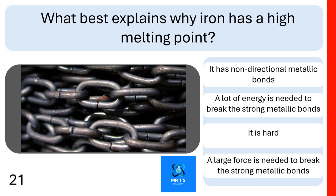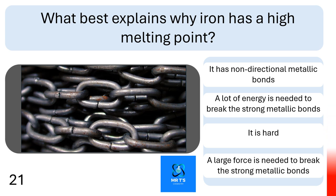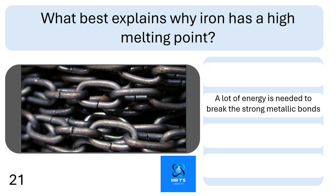Question twenty-one: what best explains why iron has a high melting point? Is it that it has non-directional metallic bonds, a lot of energy is needed to break the strong metallic bonds, it is hard, or a large force is needed to break the strong metallic bonds? A lot of energy is needed to break the strong metallic bonds — that's why it has a high melting point.